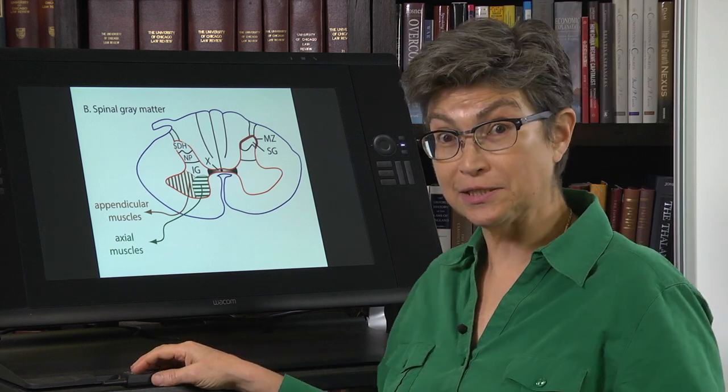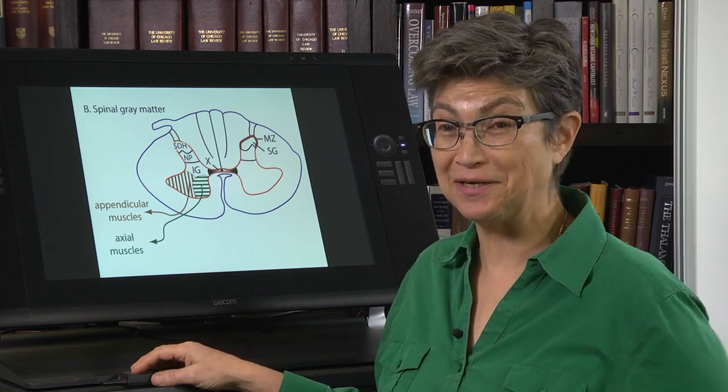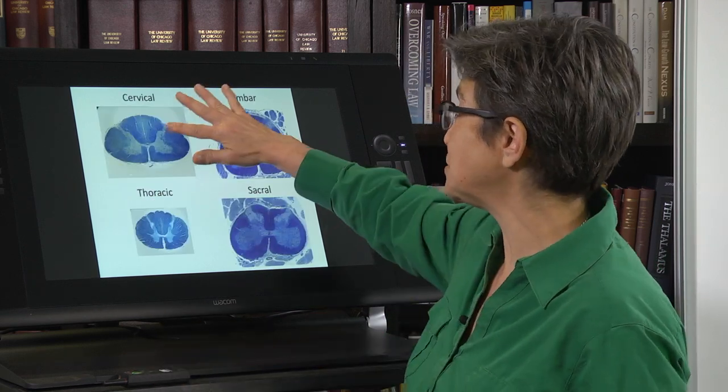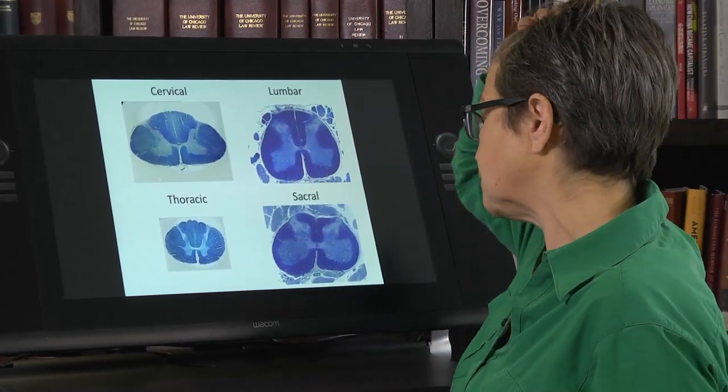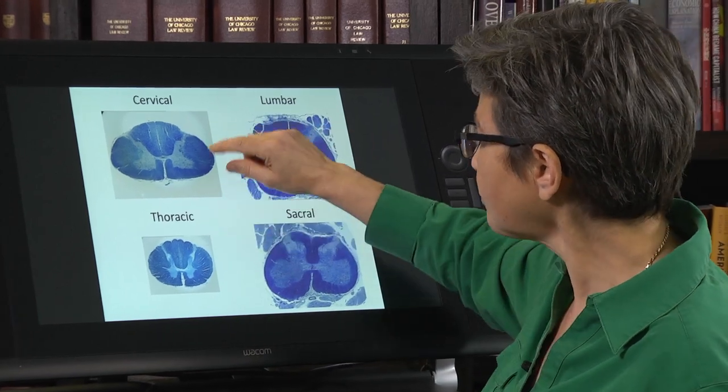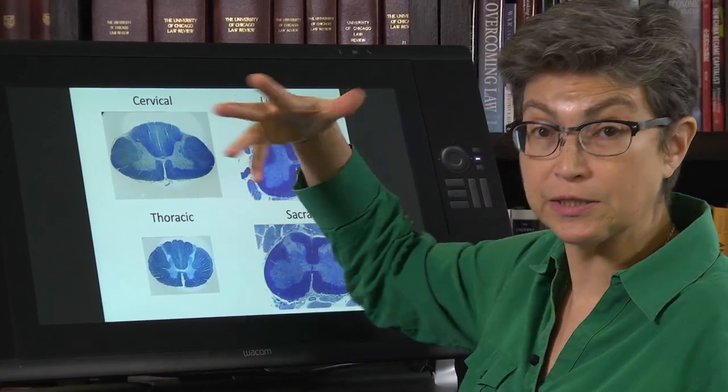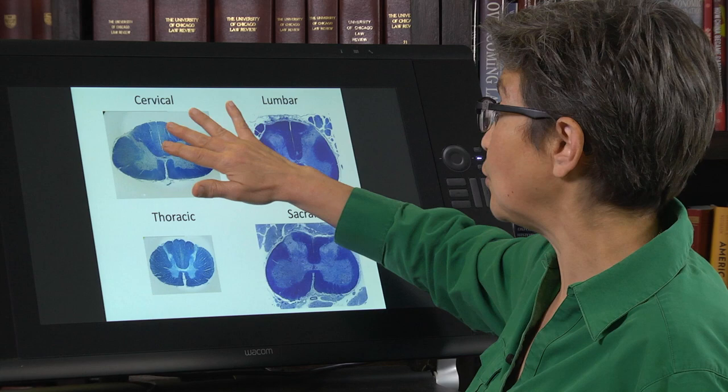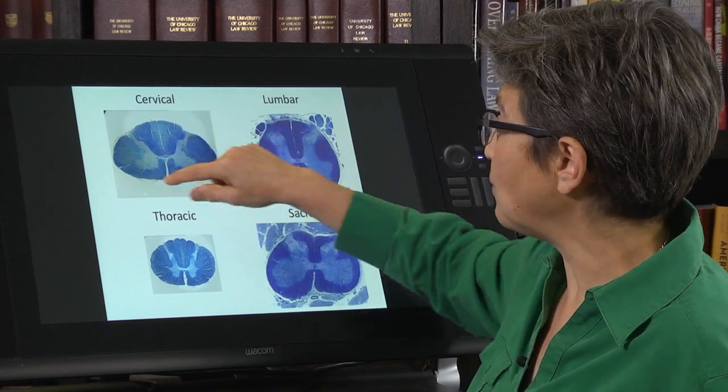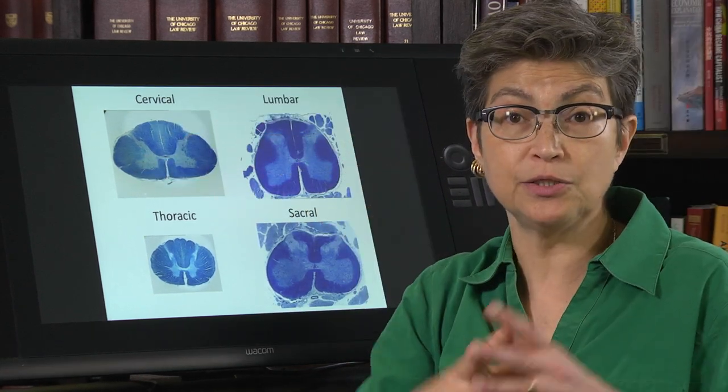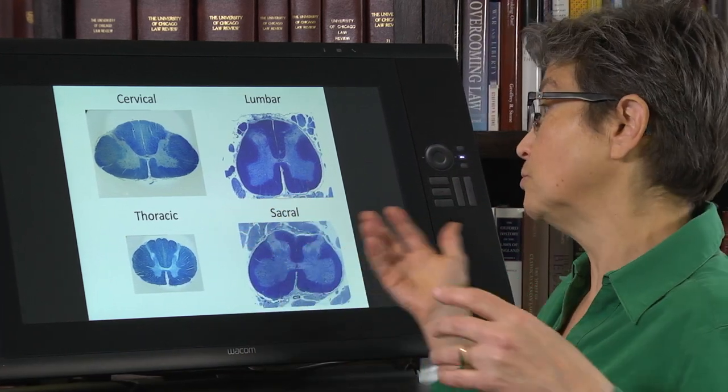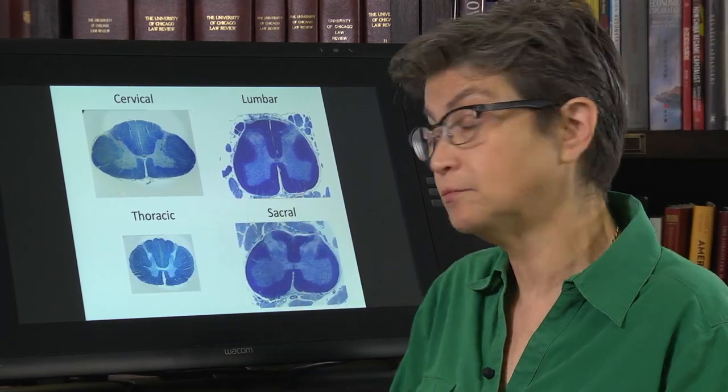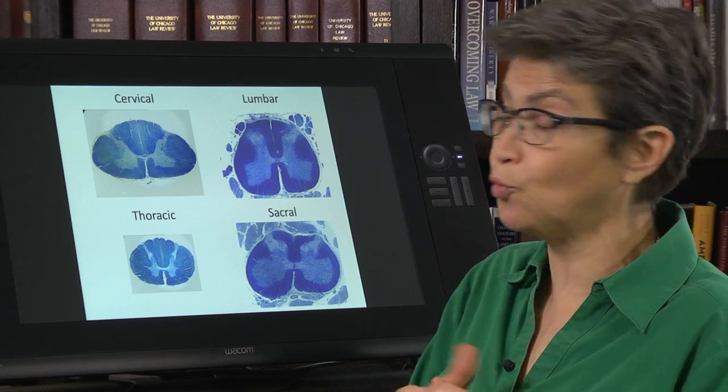So let's meet the various appearances. These are sections that are not to scale, and I apologize for that. The cervical cord is the largest. It is very large in us. So once again, these are stained for myelin, so white matter is blue and gray matter is relatively light, sort of a light blue to white.